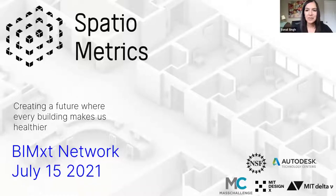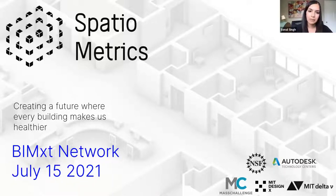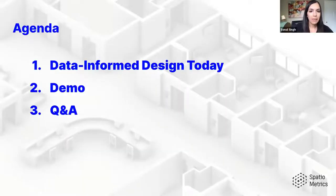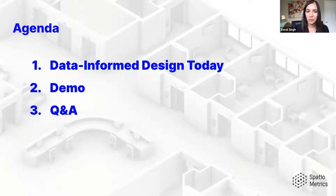I'm part of a team called Spatiometrics — a cross-disciplinary team out of MIT coming at this from views of architecture, data, health, and wellness more broadly. The team is united around the idea that if we have better access to data during the design process, we can fundamentally improve the ways that buildings affect our health and well-being. I'll talk through my view of the world, how data can be leveraged in the design process today, and then get into tactical examples.